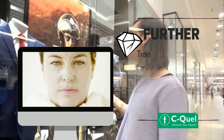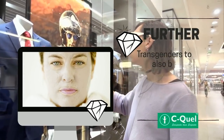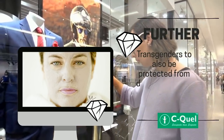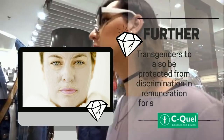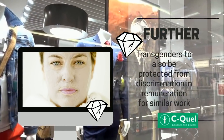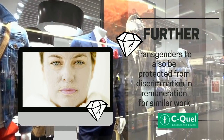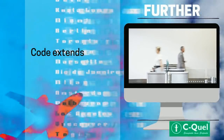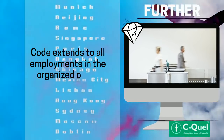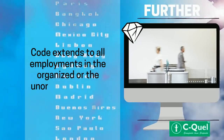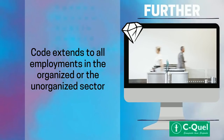There are some other noteworthy changes. Provisions relating to equal remuneration: the Code directs the third gender, i.e. transgenders, to also be protected from discrimination in remuneration for similar work. Provisions relating to minimum wages: unlike the Minimum Wages Act, which is only applicable to scheduled employments, the wage code extends to all employments in the organized or the unorganized sector.